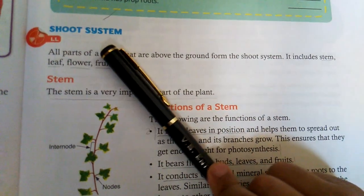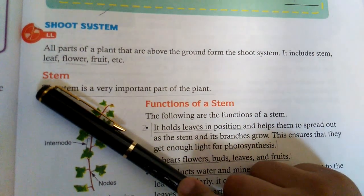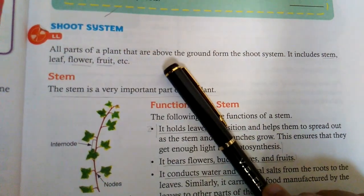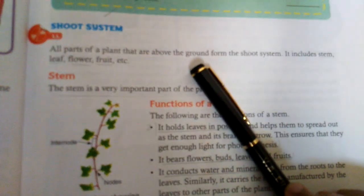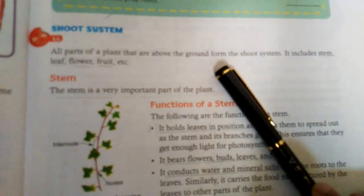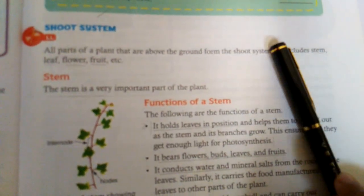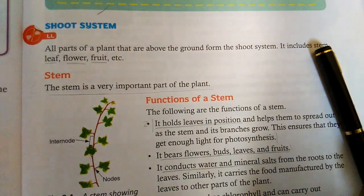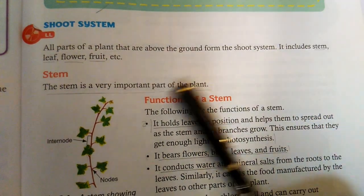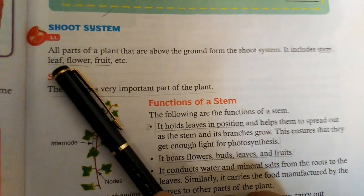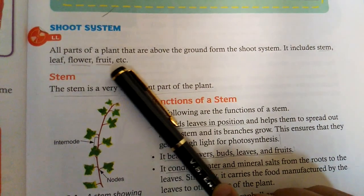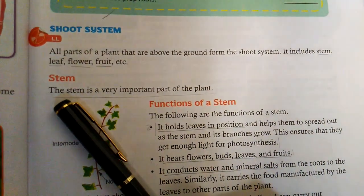Shoot system. All parts of the plant that are above the ground form the shoot system. It includes stem, leaf, flower, fruit, etc.